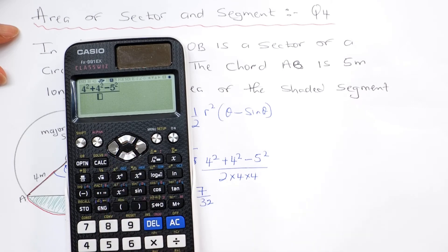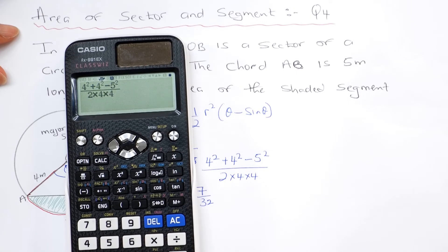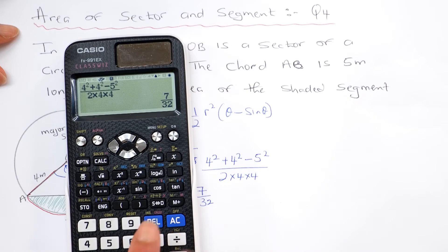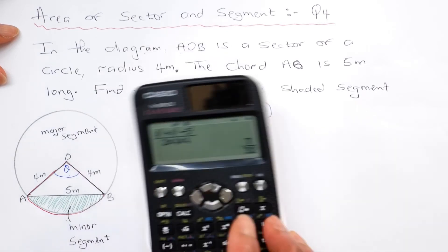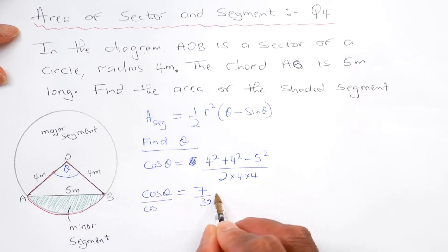Arrow key down, divided by 2 times 4 times 4, and that's 7 over 32. Now 7 over 32 is the cos of this angle. So cos theta is 7 over 32.